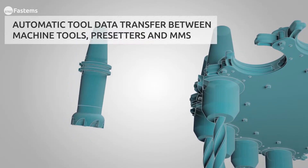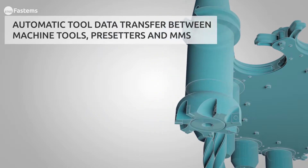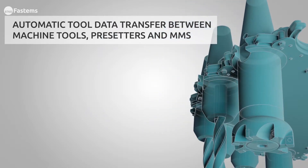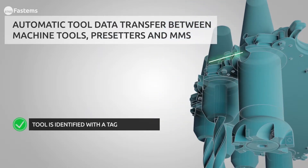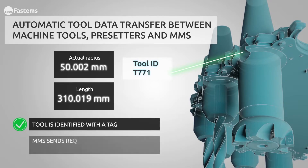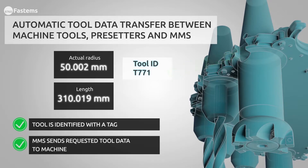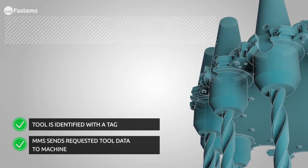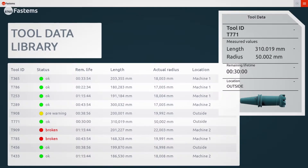When the cutting tool is placed in the machine tool magazine, the machine reads the ID tag and requests the corresponding tool data from MMS. The cutting tool offsets and parameters are then transferred automatically from MMS to the cutting machine tool.